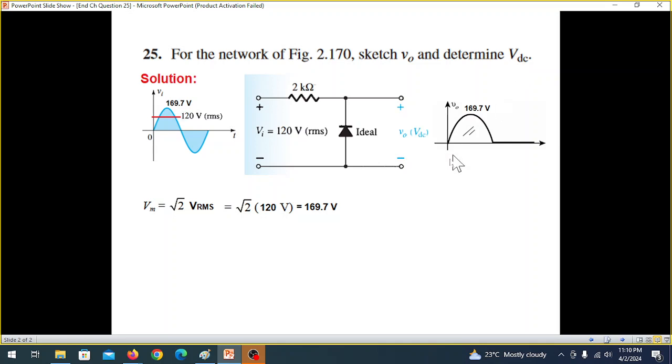Now for the DC voltage, the formula for a half-wave rectifier is V_DC equals V_maximum divided by pi. So V_DC equals 0.318 times V_maximum. V_maximum is 169.7 volts, giving us 54 volts DC.